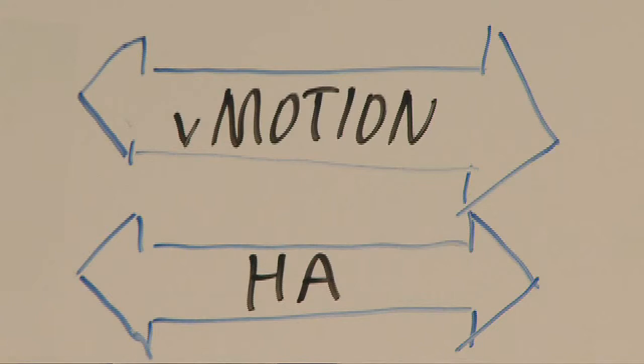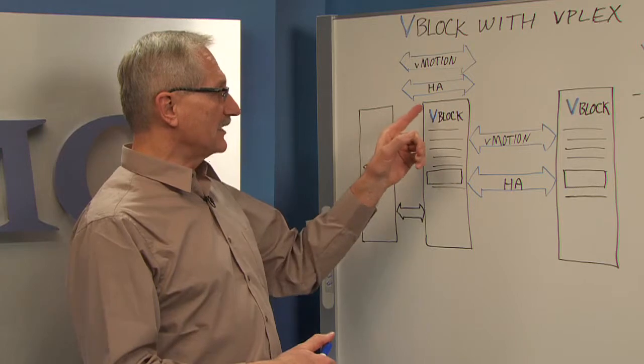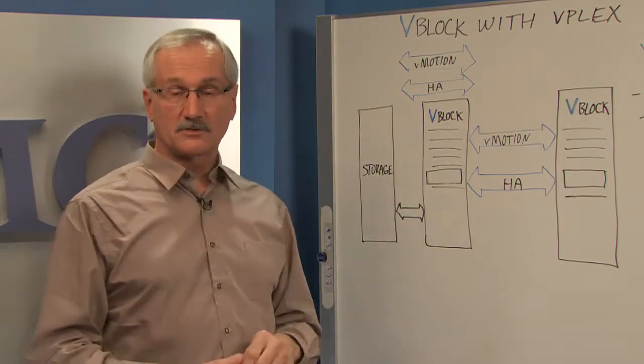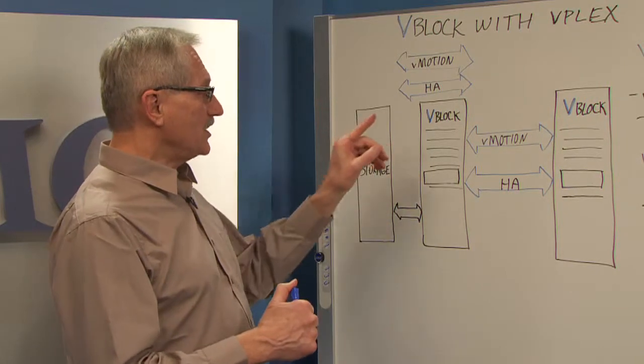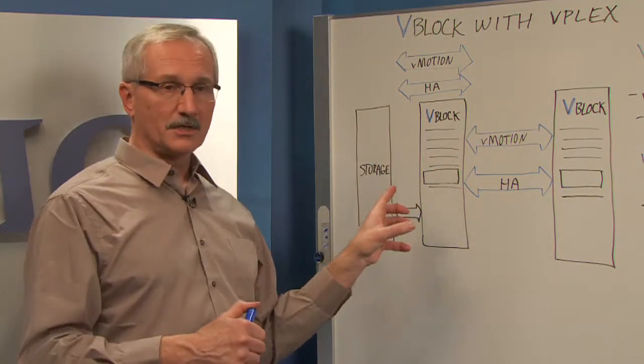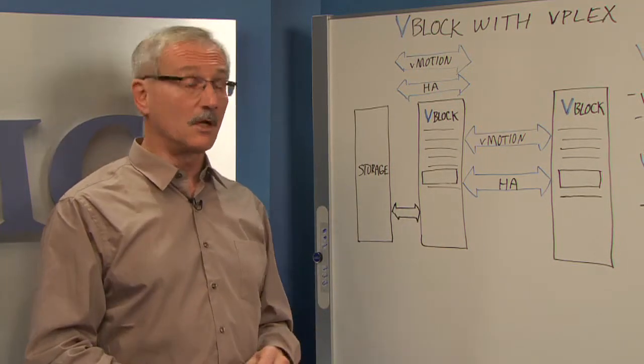HA stands for high availability. HA is the ability, if a server were to fail, that an instance of that same virtual machine can start up on another server. The problem is that HA is confined to running within just a single vBlock environment or within a single data center. So you're confined to that wall.